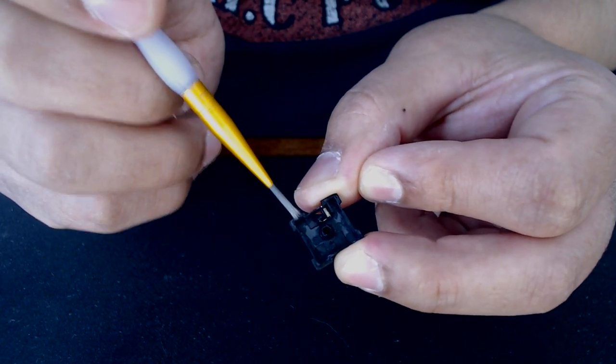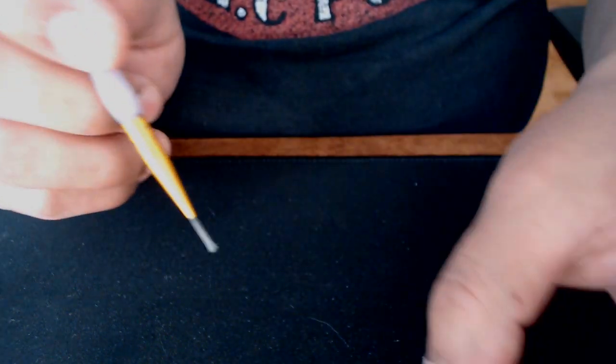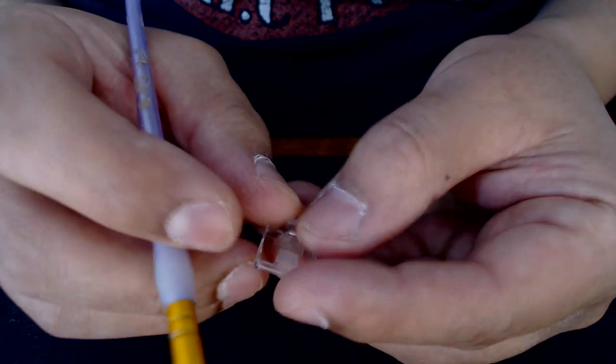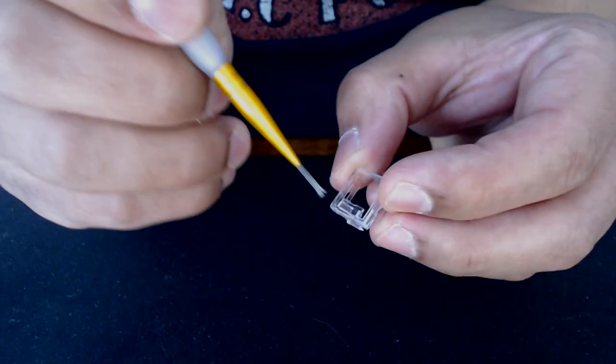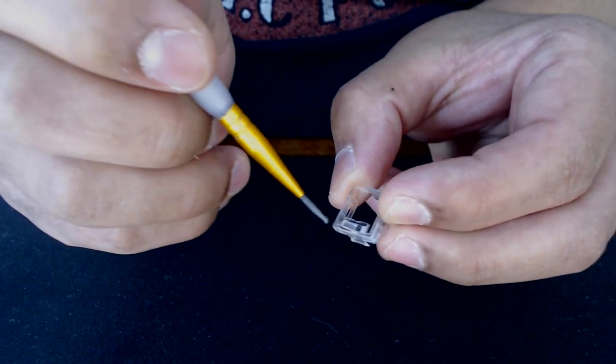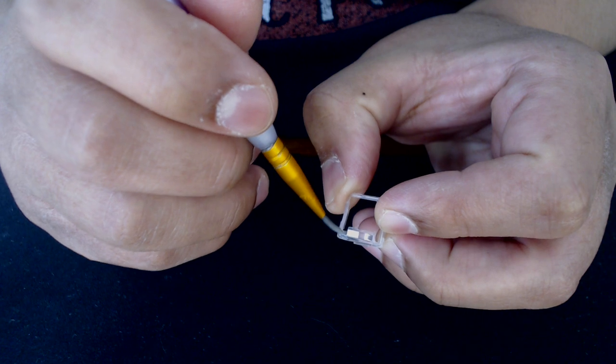So once you lube this section, I grabbed this section and I actually ended up just dabbing here, here, this corner right here where the T-shape is at, and then you just go around and spread it.